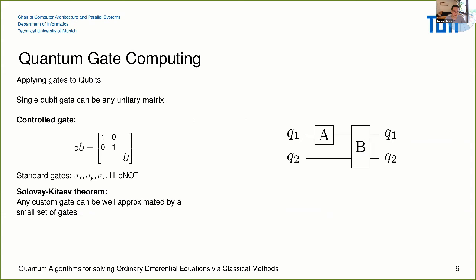The most common framework is quantum gate computing: you have some qubits, build a circuit, and apply gates to them. A gate is simply a matrix — for one qubit it's a 2x2 unitary matrix, for two qubits it's a 4x4 unitary matrix. What is really powerful is that you can have a small set of universal gates and build any custom gate from them, similar to how classical computing only needs two gates to be Turing complete.